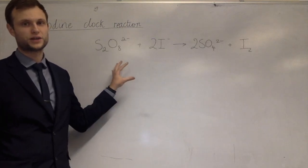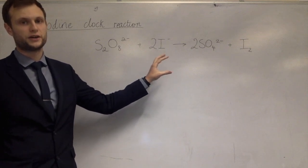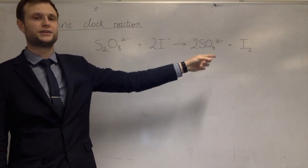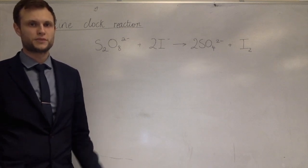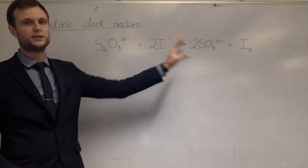It reacts peroxidised sulfate ions with iodide ions to make sulfate ions and iodine. Iodine in aqueous solution is a reddish brown color and so this goes from clear to being reddish brown.